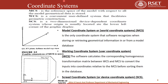The last topic of this module is the coordinate system. There are mainly three kinds: the model coordinate system (or world coordinate system), the working coordinate system (or user coordinate system), and the screen coordinate system. The model coordinate system is the reference space of the model in which all geometric data is stored. The working coordinate system is a convenient user-defined system that facilitates geometric construction. The screen coordinate system is a two-dimensional device-dependent system whose origin is usually located at the lower left corner of the graphic display. The model coordinate system is the only one recognized by the software when storing or retrieving geometric information from a model database.